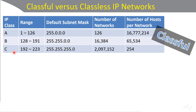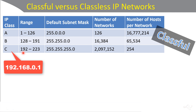In a typical SOHO network, you might have an IP address like 192.168.0.1. That would be a class C IP address.